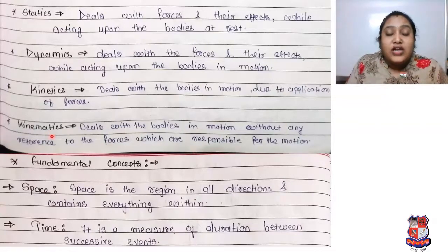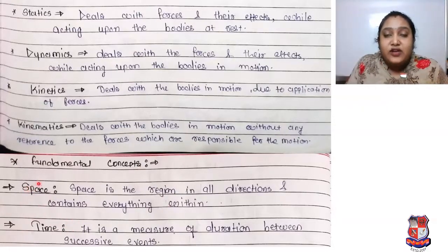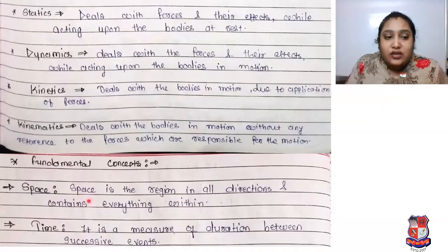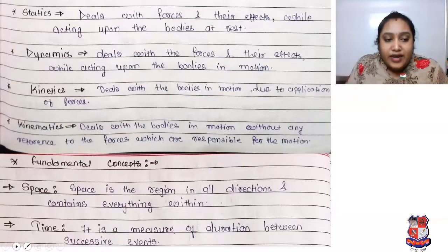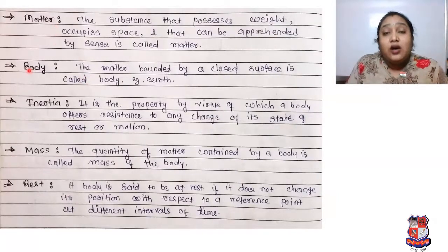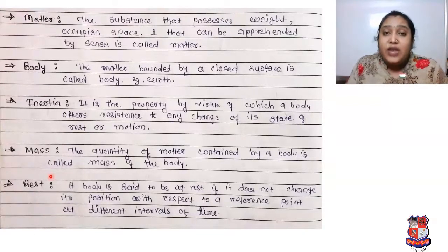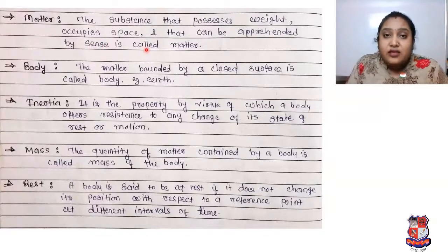Now, what are the fundamental concepts we have to discuss? Space and time, among many others. Space is the region in all directions and contains everything within — this is called space. Time is a measure of duration between successive events. Matter, body, inertia, mass, and rest are all very important to understand, as many topics and subjects are based on them. Matter is the substance that causes weight, occupies space, and can be apprehended by the senses.